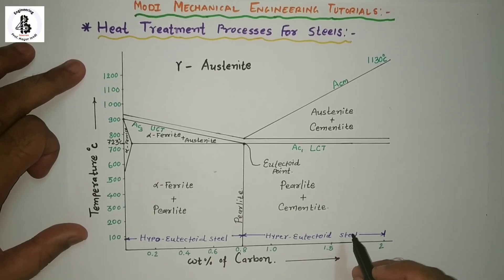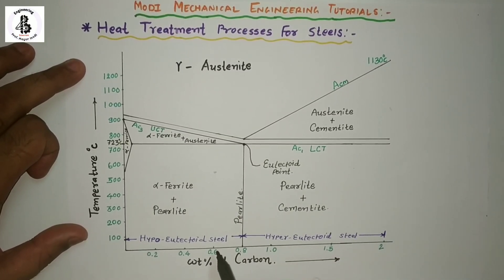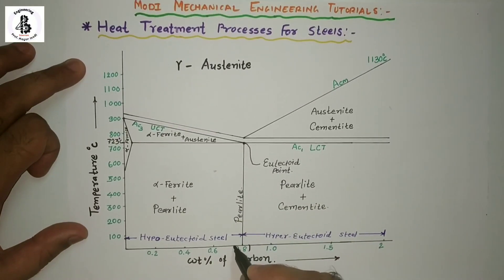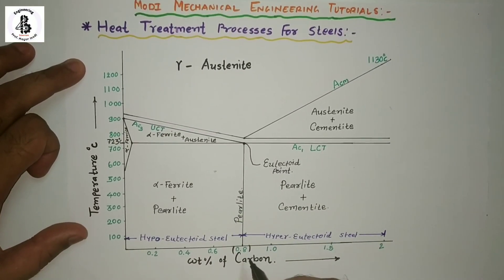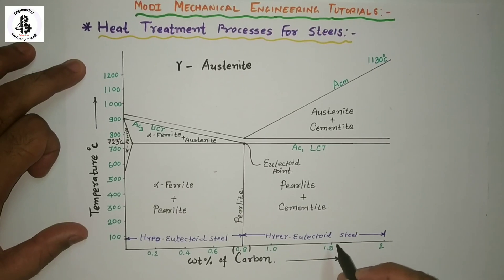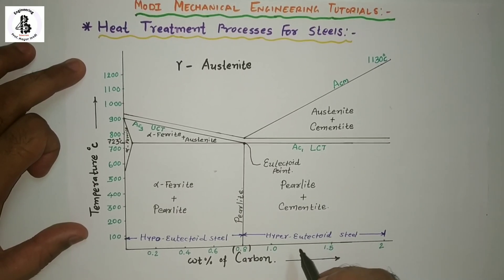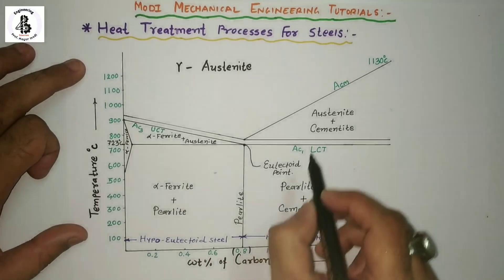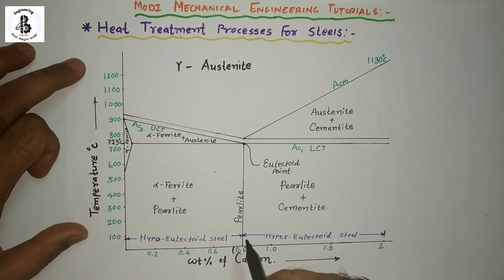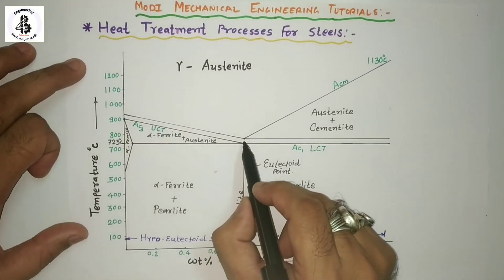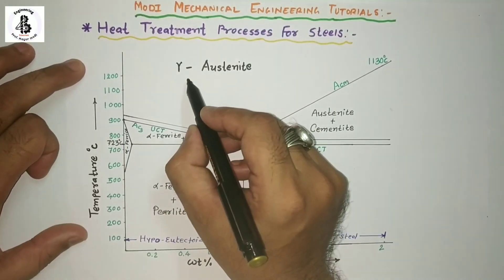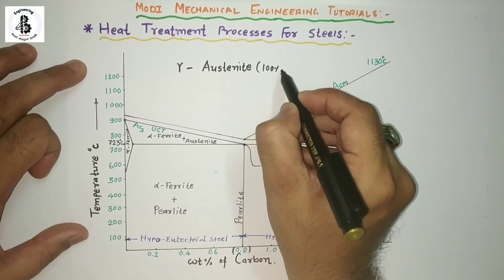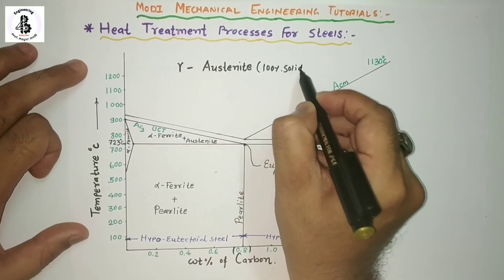If you want to learn in detail about hypo-eutectoid steel, eutectoid steel (0.8% carbon steel), or hyper-eutectoid steel, you will find a link in my description box. As you can see, this is similar to our iron-carbon diagram. Above 723°C it will be the formation of gamma austenite, or 100% solid phase of the steels.